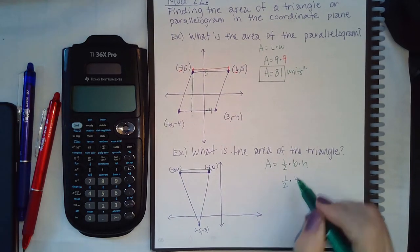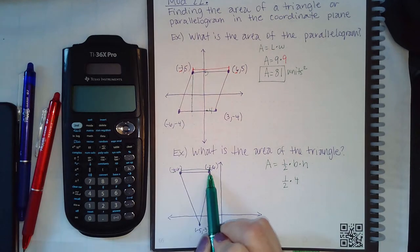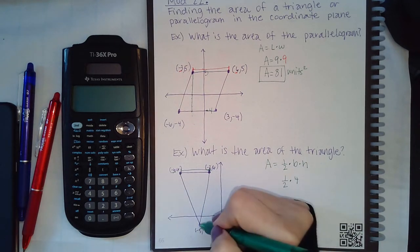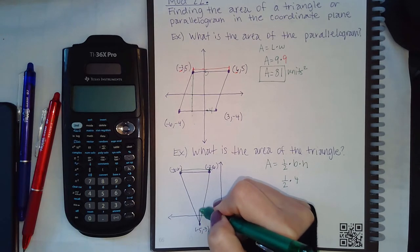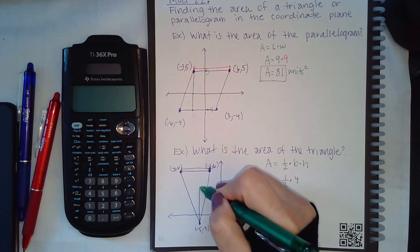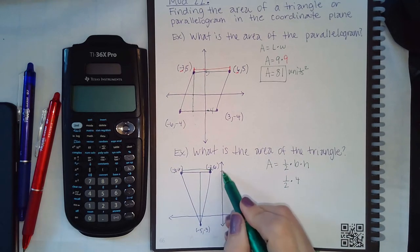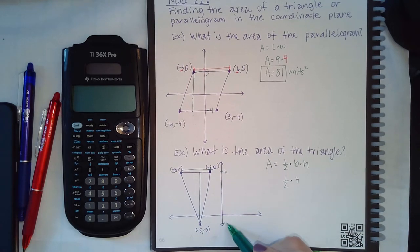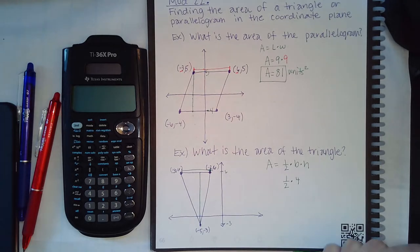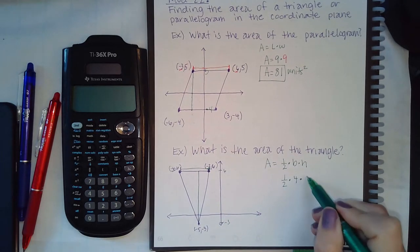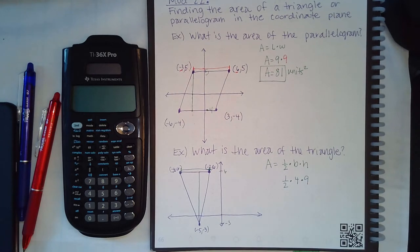So one-half times 4 units to get from negative 6 to negative 2. However, the height is from the peak until it hits the base, so I need to calculate from this y value of 6 to this y value of negative 3. It would have gone 6 units and then 3 more, making the height 9 units total.